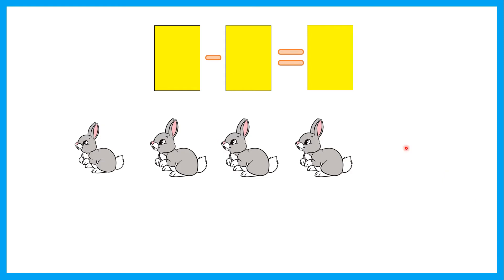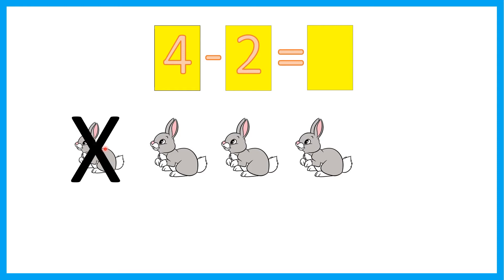How many rabbits are in the picture? Let's count. 1, 2, 3, 4. Four minus two — we are going to take away two rabbits. So let's cross out two rabbits. 1, 2. How many left? 1, 2. The answer is two.